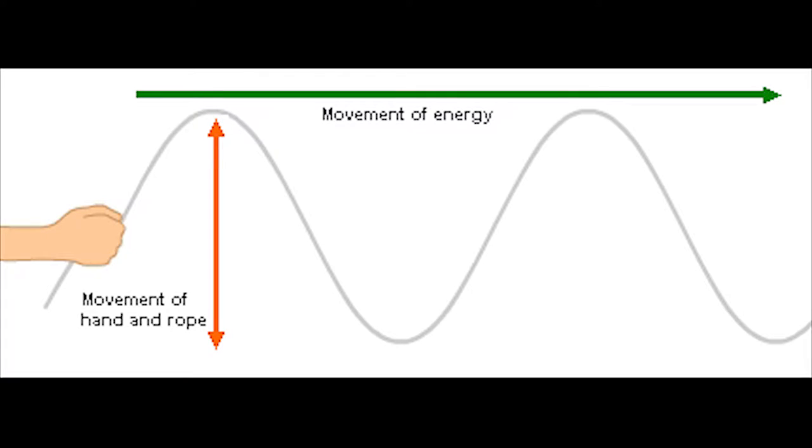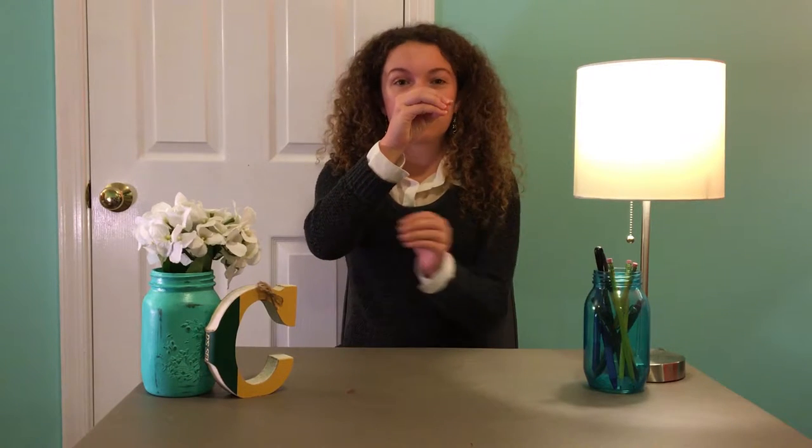There are two basic types of waves: transverse and longitudinal. Transverse waves move the particles of their medium perpendicular to the direction in which the wave travels. For example, if you pull up and down on a string, you send a transverse wave through the string. As energy reaches a particle, it moves up. Once the energy passes, it moves back down to its original position.